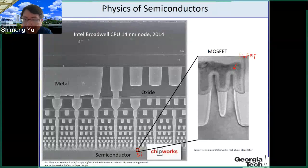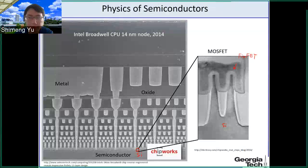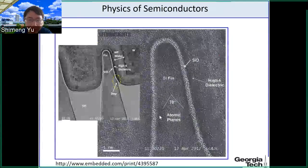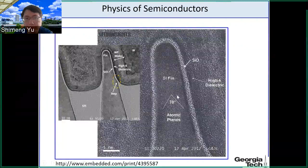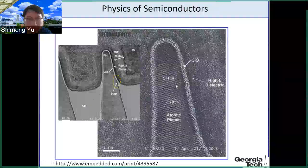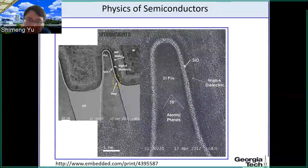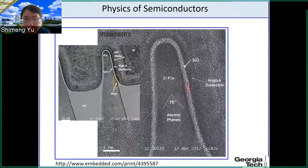In this microscope image, on the substrate we have this silicon. Today we are going to discuss the silicon properties in more detail. If you further zoom in to look at the silicon fin, you will see the atomic structure from high-resolution transmission electron microscopy — these are individual atoms.